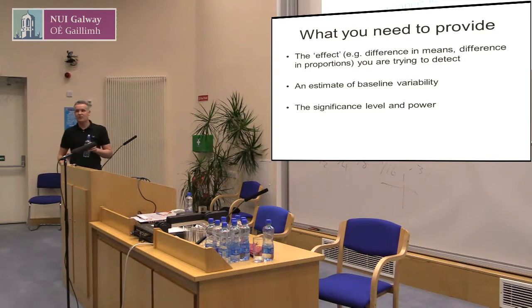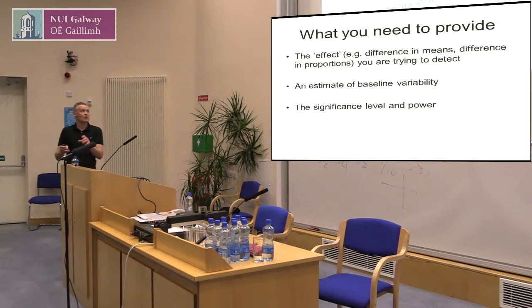An estimate of variability — if you're going to detect a change in some system, you'd want to know how variable that system is at the start. So you're going to be asked to provide information as to what's happening under the status quo, the significance level, and power. So we've talked about those two.